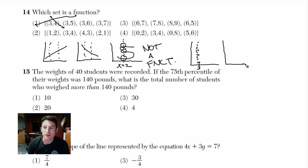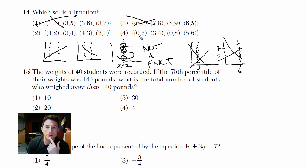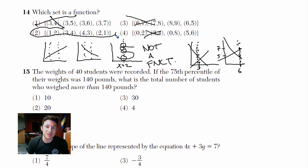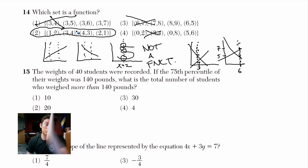Looking at number 3: there's (6, 7) and (6, 5) — at x equals 6 there are two points, so that fails too. And number 2 has (0, 2) and (0, 8) — same x, two y-values, so that's also out. That leaves choice 4: (1, 2), (3, 4), (4, 3), (2, 1) — no duplicate x-values. Every x has only one y-value, so that's our function.